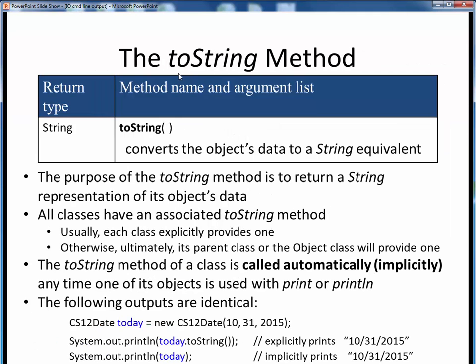It turns out that every class in Java has some toString method, whose purpose is to convert its object's data into some equivalent string representation. This is the generic API that holds for any class. It takes no input arguments and returns a string version of the object's data.